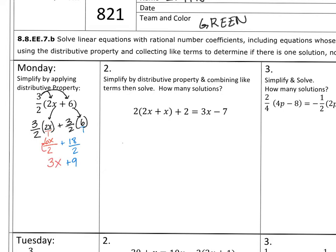Now I can simplify those fractions because 2 goes into 18 nine times and 2 goes into 6x, 3x. So this complicated problem, when you simplify it, it's something very simple: 3x plus 9.